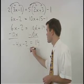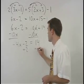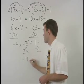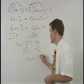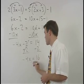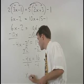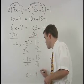Add 2 to both sides, and we have negative 4x equals 16. Divide both sides by negative 4, and x equals negative 4.